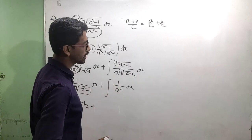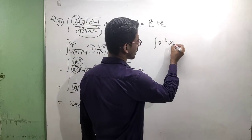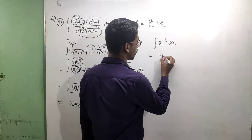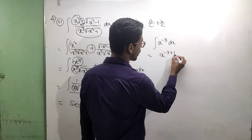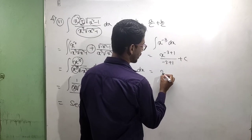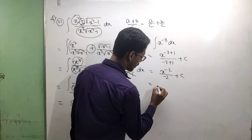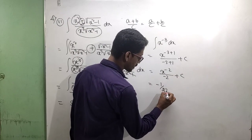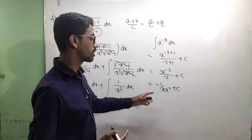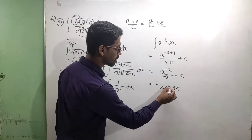Plus one by x cube, which is x to the power minus three, integration dx. By the power formula: x to the power minus three plus one, divided by minus three plus one, plus C. This gives x to the power minus two by minus two plus C, which equals minus one by two x square plus C. So integration of x to the power minus three dx equals minus one by two x square plus C.